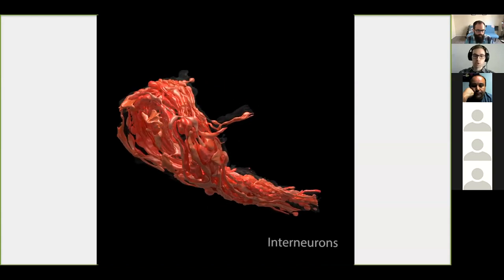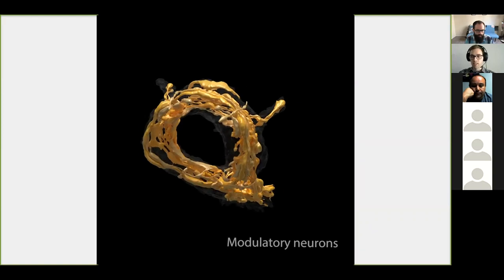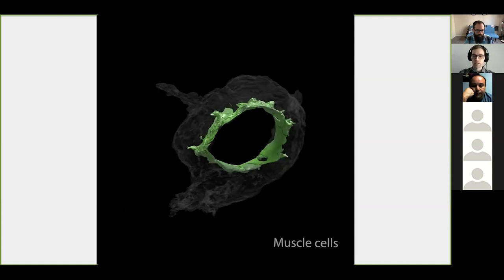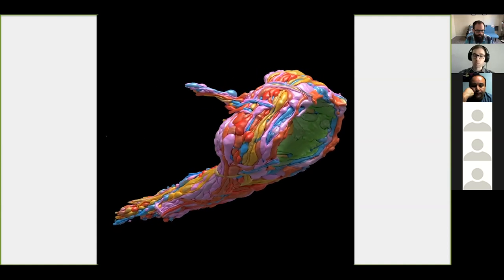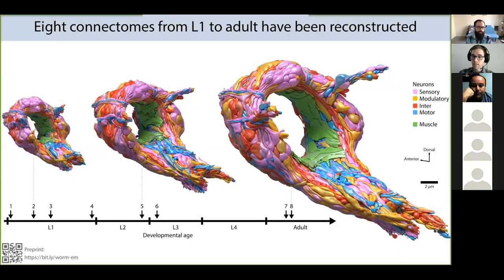Each cell is colored by its type: sensory neurons, interneurons, motor neurons, modulatory neurons, and muscles. We define modulatory neurons by their prominent presence of dense core vesicles in the EM or known expression of monoamine neurotransmitters. We also annotated synapses — to avoid subjectivity, three pairs of eyes looked at every single synapse so we could be more certain that what we report is a true synapse. We did this for eight C. elegans brains of isogenic animals across development. We don't have an L4 animal — the one we imaged turned out to be a spontaneous male — but we have enough datasets to examine how synaptic connectivity, neuron shape and size, and proximity contact between neurons change across maturation.